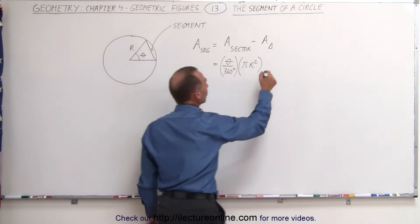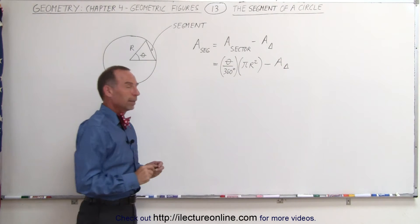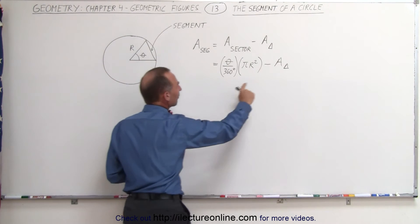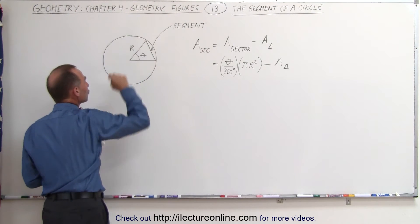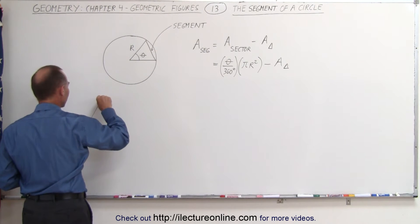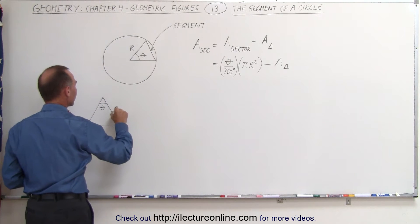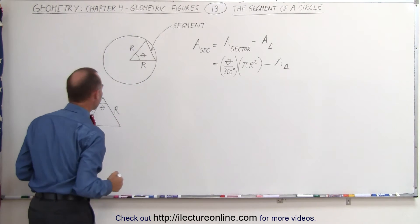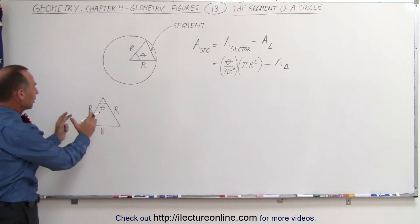From that we want to subtract the area of the triangle. Let's take this triangle and draw it over here. Using the angle at the top, we have angle theta, and on both sides we have side r — the radius — and then we have the base of the triangle. So we need to find the area of that triangle.